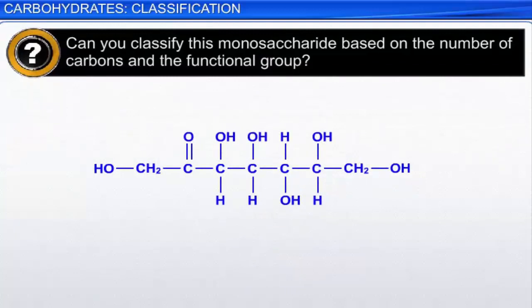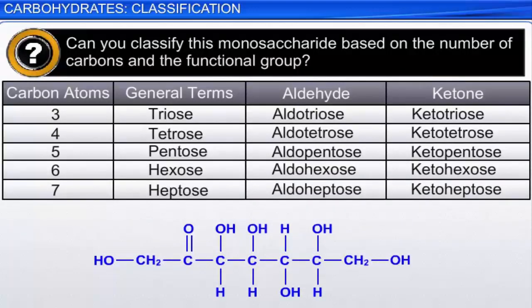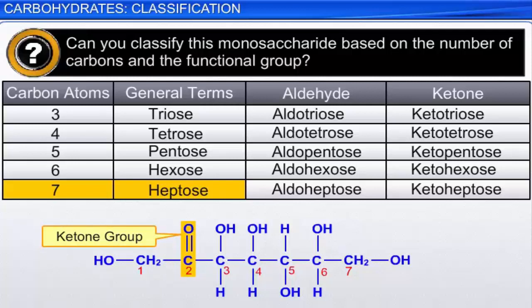Can you classify this monosaccharide based on the number of carbons and the functional group? By counting along the carbon skeleton, we see that there are seven carbon atoms — a heptose. This molecule is one of the few heptoses found in nature. This sugar contains a ketone group, so it is a ketose. Combined, we can fully describe this as a ketoheptose.